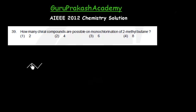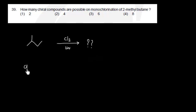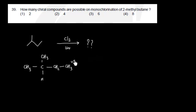This is isobutane — carbon number two has a methyl group. If I do monochlorination with Cl₂ in the presence of UV light, how many possible products are there? Writing the formula CH₃–CH(CH₃)–CH₂–CH₃, we can see there are basically four kinds of hydrogen possible. The two CH₃ groups have equivalent environments, so we have four available sites.